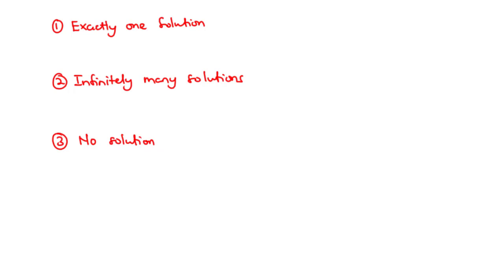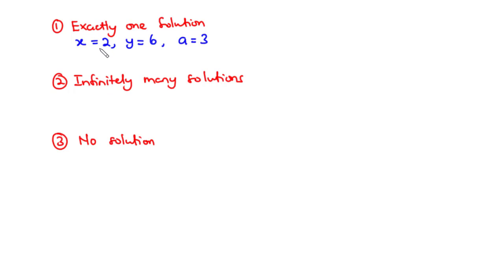And three, a linear equation can have no solution. Now, let's look at some examples under these three possibilities. If a linear equation has exactly one solution, examples would be x equals 2, y equals 6, a equals 3. These equations are examples of linear equations having exactly one solution — there is only one solution for x (x equals 2), only one solution for y (y equals 6), and only one solution for a (a equals 3).